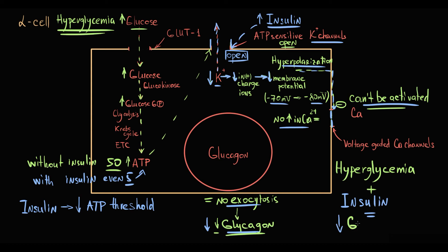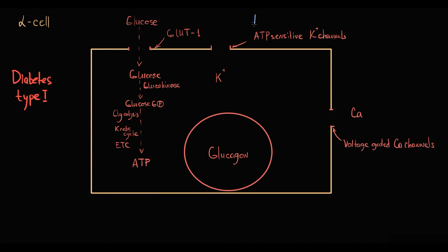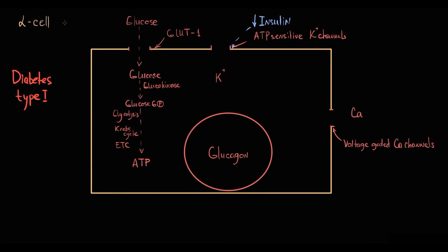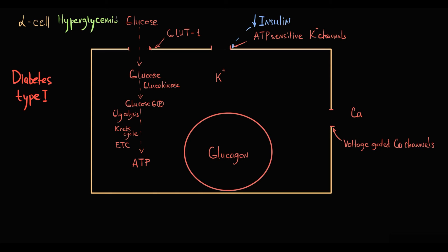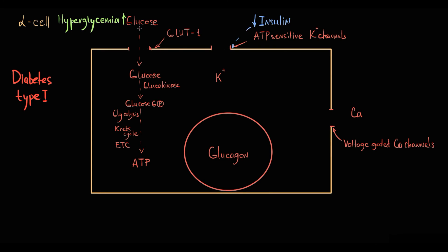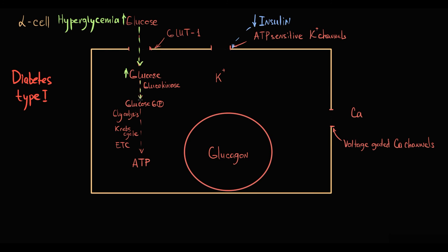An interesting case is diabetes type 1. The problem in diabetes type 1 is that insulin level is low, and because of that, tissues cannot take up glucose, so blood glucose level is high. In diabetes type 1, there is paradoxically high blood glucose level and low insulin level. High amounts of glucose molecules enter the alpha cells and undergo glycolysis, resulting in the production of high amounts of ATP molecules. But because insulin level is very low, even the production of a large amount of ATP molecules is not sufficient to keep potassium channels in the open state for a prolonged period of time.